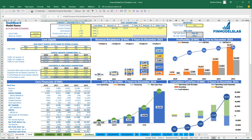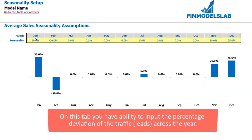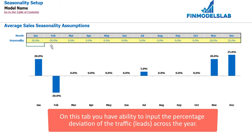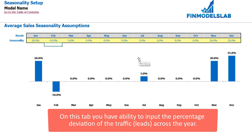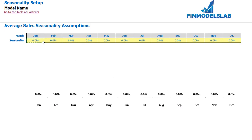You can also set up the seasonality of your sales. For example, if in January you have +20% seasonality, your average annual sale will be multiplied by 120%. If in February it is -10%, you multiply by 90%. If you don't need any seasonality, you can zero out those assumptions and the model will not apply any seasonal adjustments.